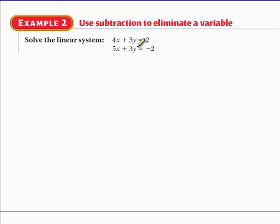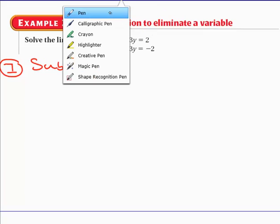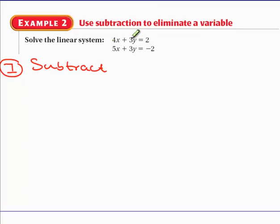Here is example 2, and there are actually two ways to do this. The first way is to use subtraction. If you look at the equation, you have 3y and 3y. If we add them, we get 6y and 9x — nothing gets eliminated. However, if we subtract 3y from 3y, we get 0y and the y variable gets eliminated.